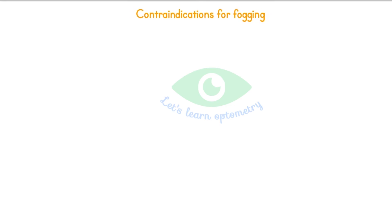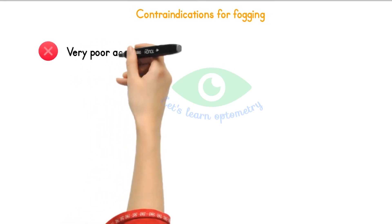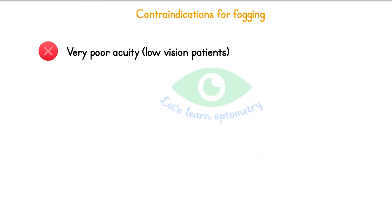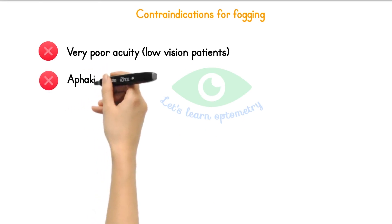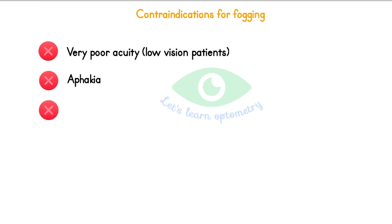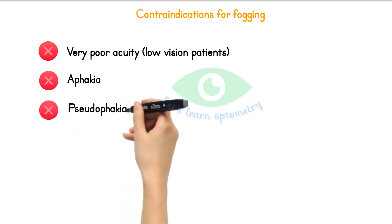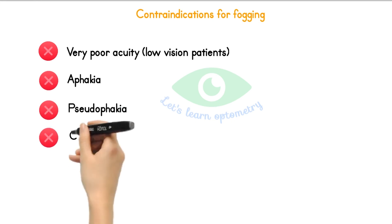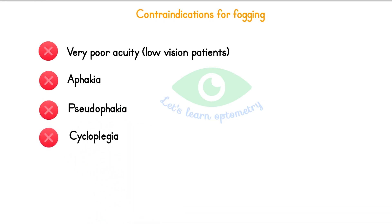Contraindications: patients with very poor visual acuity, like in low vision, may be difficult to fog as they may be unable to differentiate between pre- and post-fogging vision states. Aphakia and pseudo-aphakia, because there is no natural lens present in the eye to accommodate. Cycloplegia — here we use a chemical agent to paralyze the ciliary body, thus preventing accommodation, so as the accommodation has already been blocked, there is no need to do fogging again.